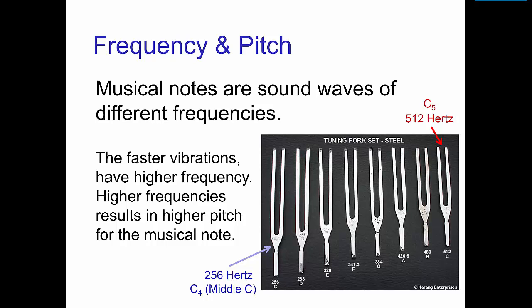On tuning forks, the frequency is marked right on the handle. This large tuning fork has a frequency of 256 hertz, which is the musical note middle C. The small tuning fork vibrates faster. It has a frequency of 512 hertz, which is also C, but one octave higher.